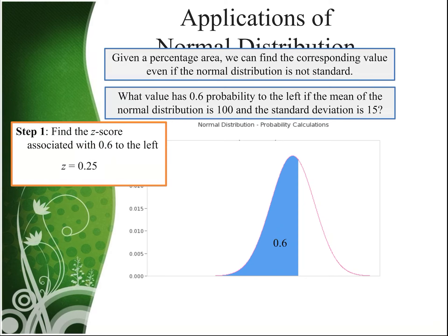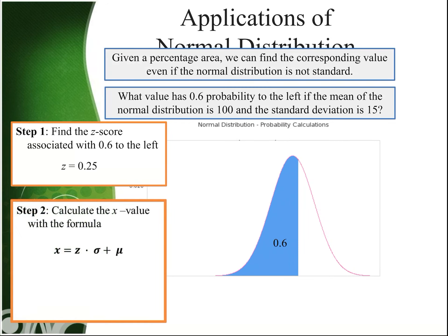And when we do that using our chart, we see that the z-score associated with 0.6 to the left is the z-score of .25. And then we can use a variation of the z-score formula we've been using where we solve for the x value instead of the z value. And we can plug in z equals 0.25, sigma is 15, and mu, or the mean, is 100.